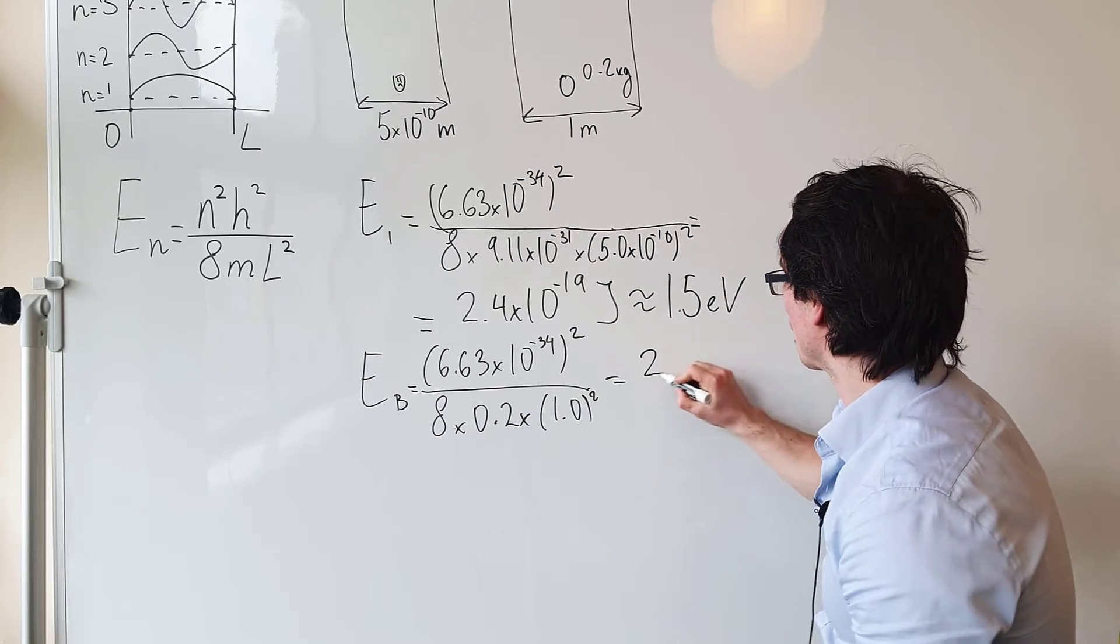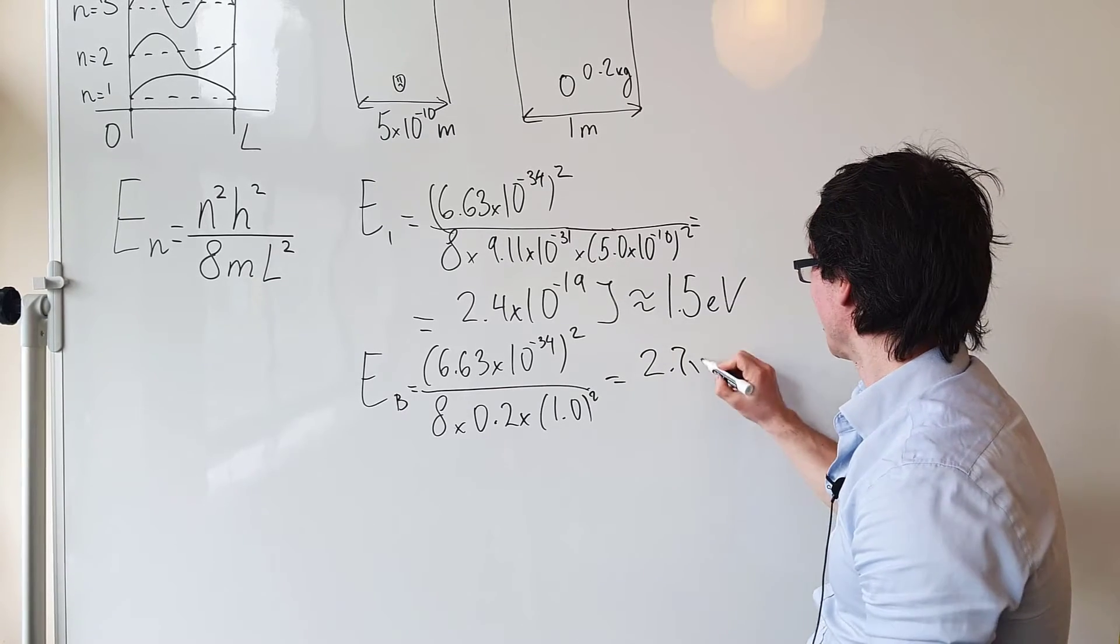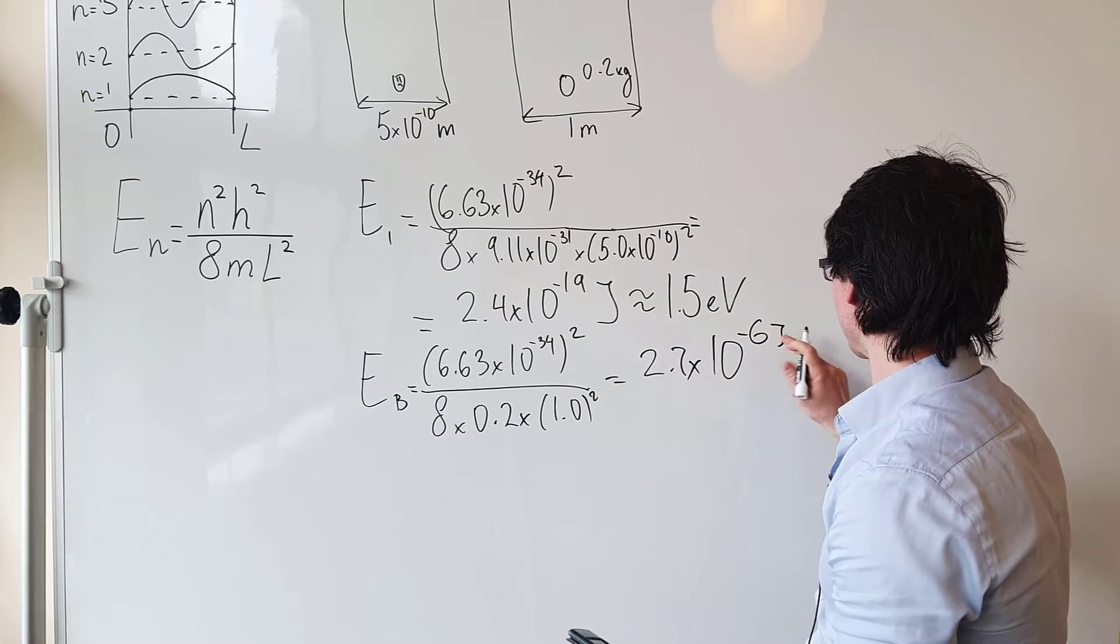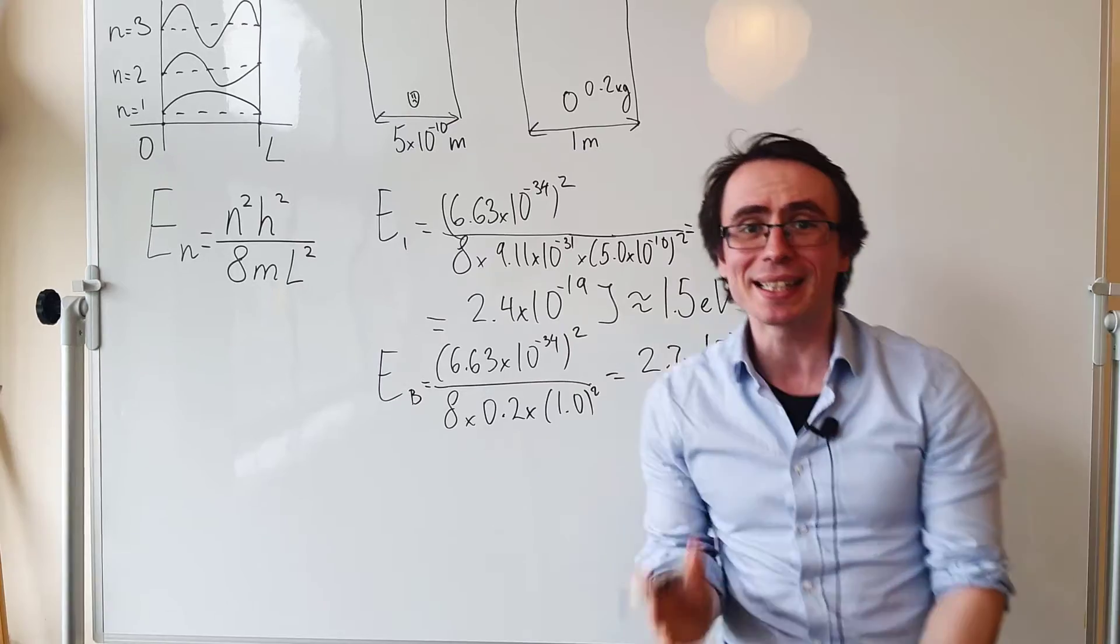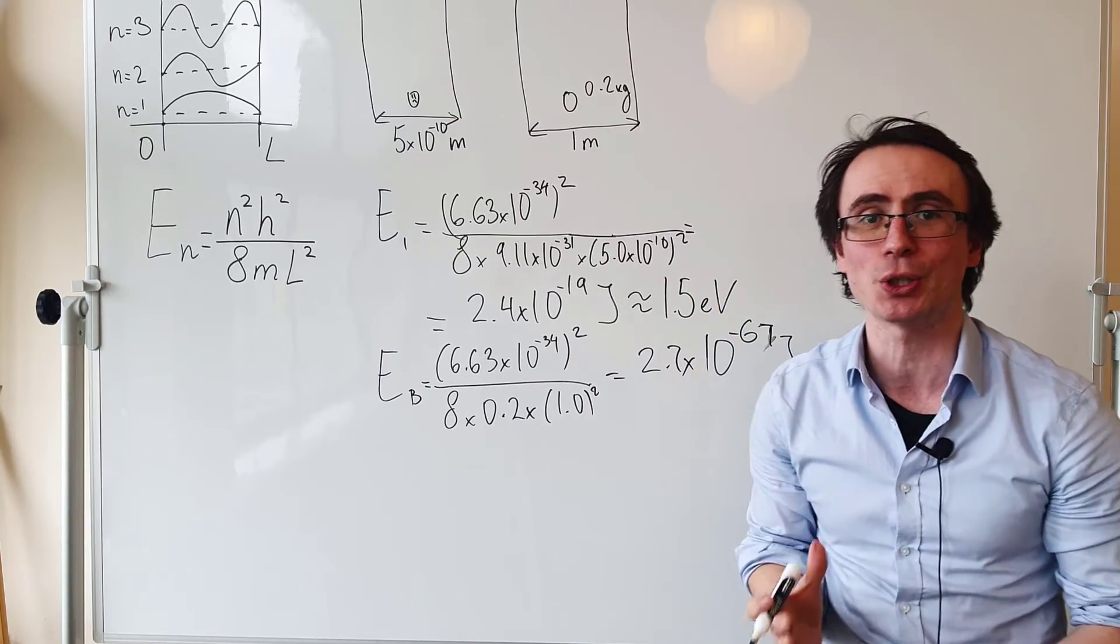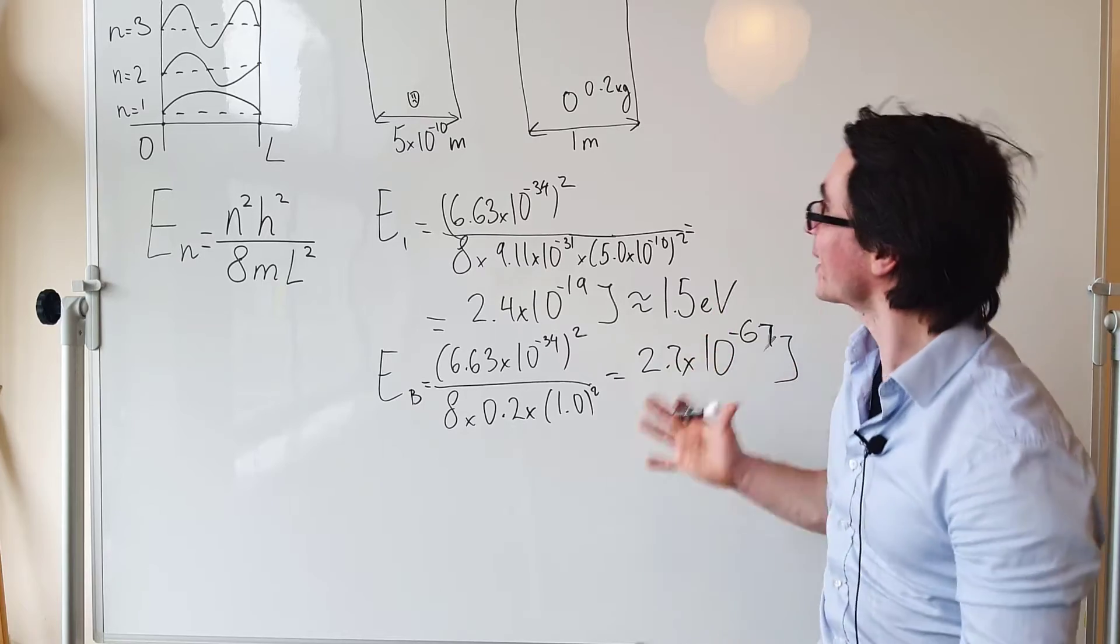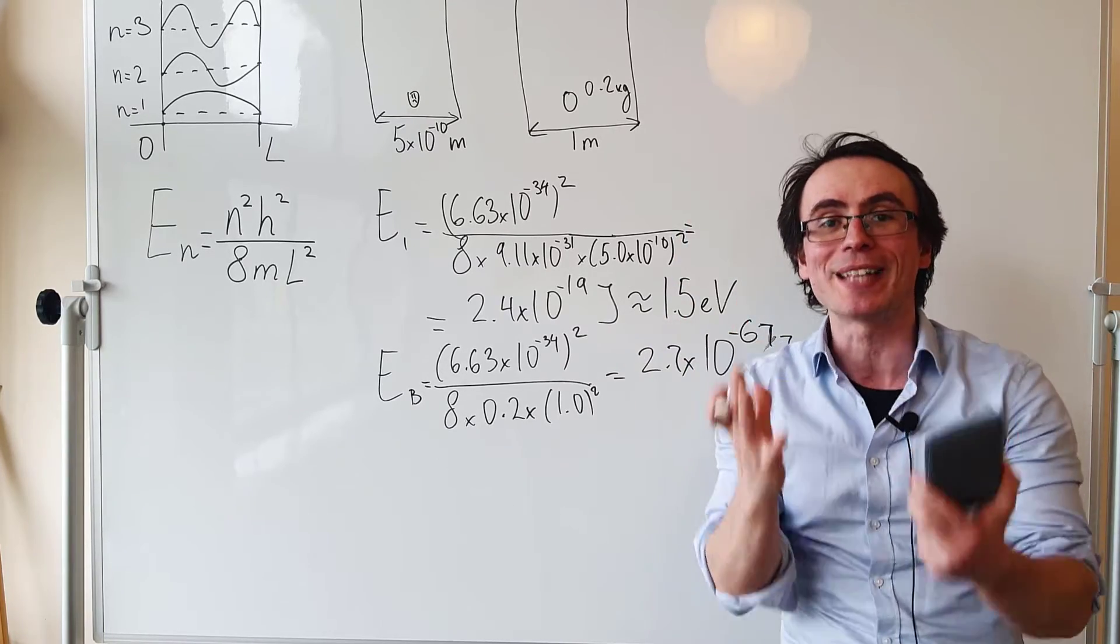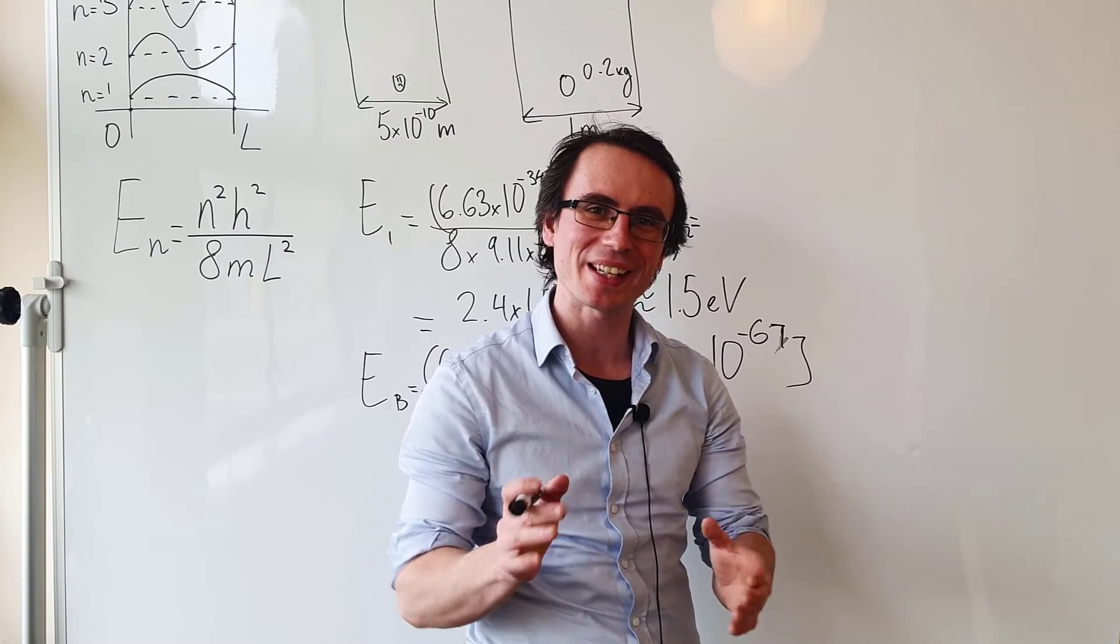We are going to get about 2.7 times 10 to the power of minus 67 joules. This is a monumentally small amount of energy, and that will be the lowest energy that this macroscopic sized object could have. Let's take this a step further still. I'm going to show you why nuclear fission and nuclear fusion are so powerful.